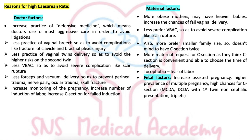Maternal factors include: more obese mothers having heavier babies, increasing chances of failed vaginal delivery; less preference for VBAC by mothers due to fear of scar rupture; preference for small family size so mothers don't mind having C-section twice; more maternal requests for C-section thinking it is convenient and allowing them to choose time of delivery — meaning C-section on maternal demand; and tocophobia — fear of labour. Fetal factors include: increased assisted pregnancies and IVF, higher prevalence of multiple pregnancies, high chances of C-section in monochorionic twins, first twin non-cephalic or triplets, and monochorionic diamniotic twins with complications. Thank you.